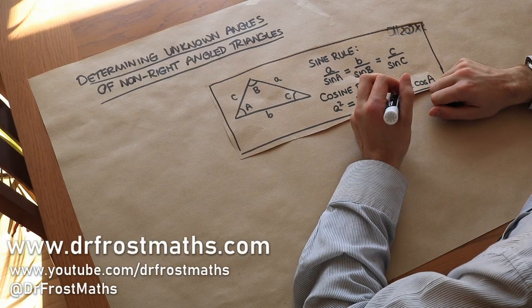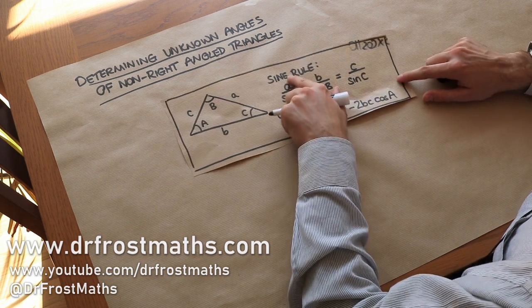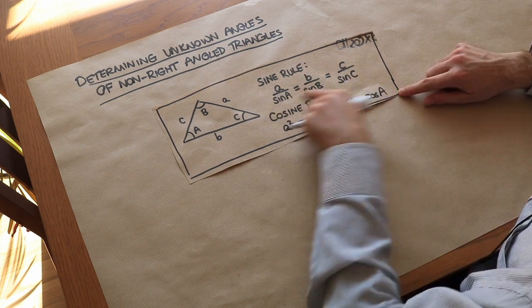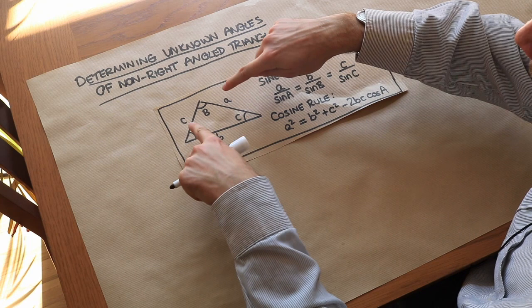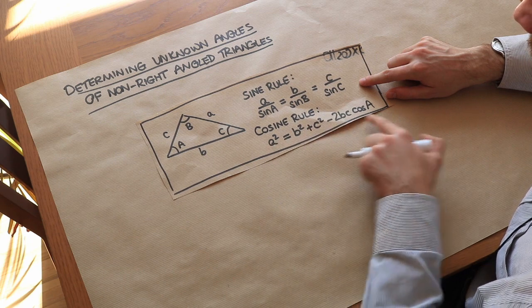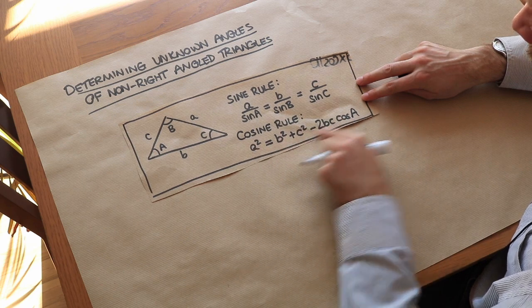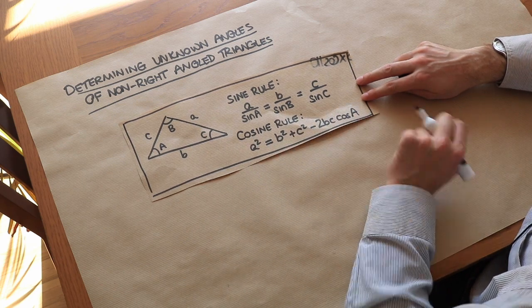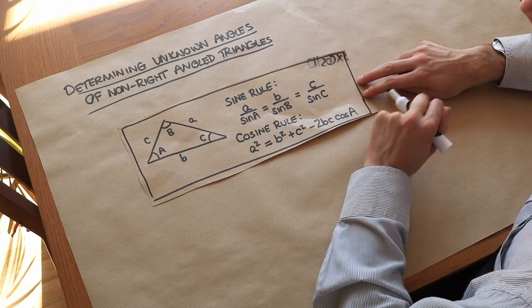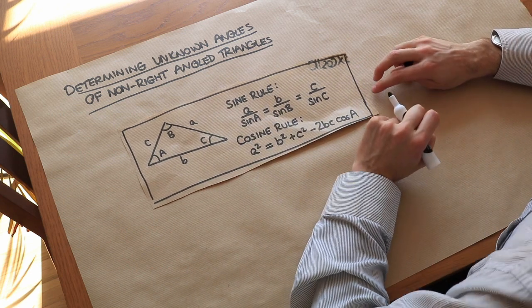Hello and welcome to this video on determining unknown angles of non-right angled triangles. In the previous video we saw how we could use the sine rule and the cosine rule to determine unknown lengths. We used the sine rule if we had two side-angle pairs, and the cosine rule if we involved three sides and one angle. If you haven't seen that video yet, please stop this video now and watch that first.